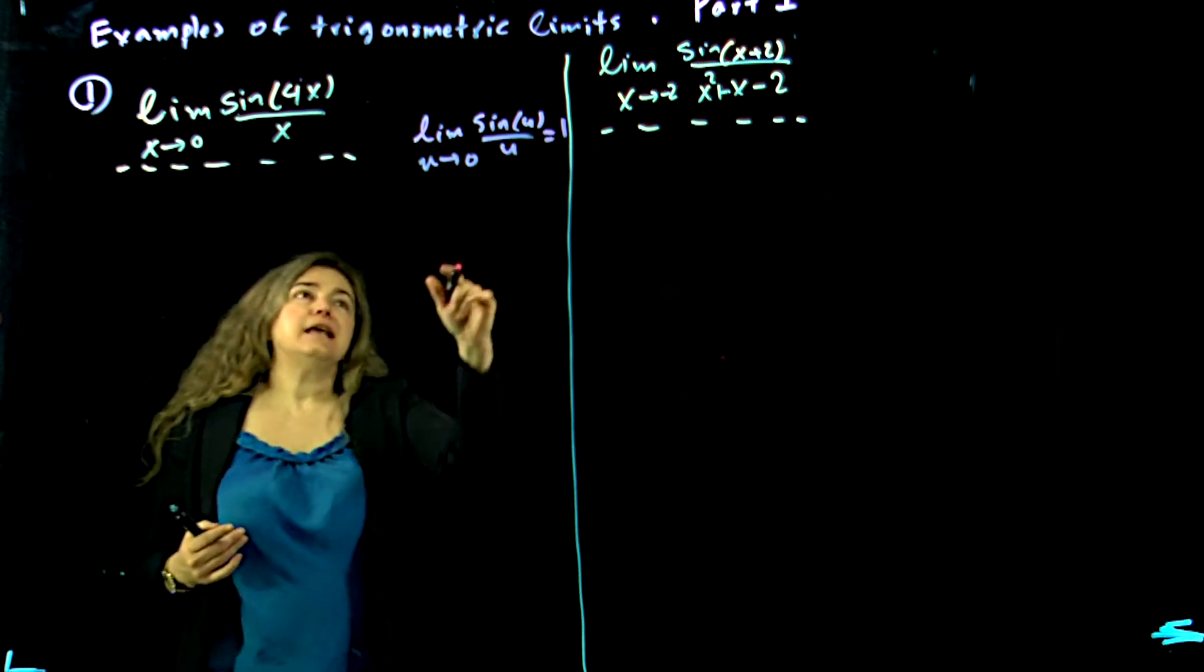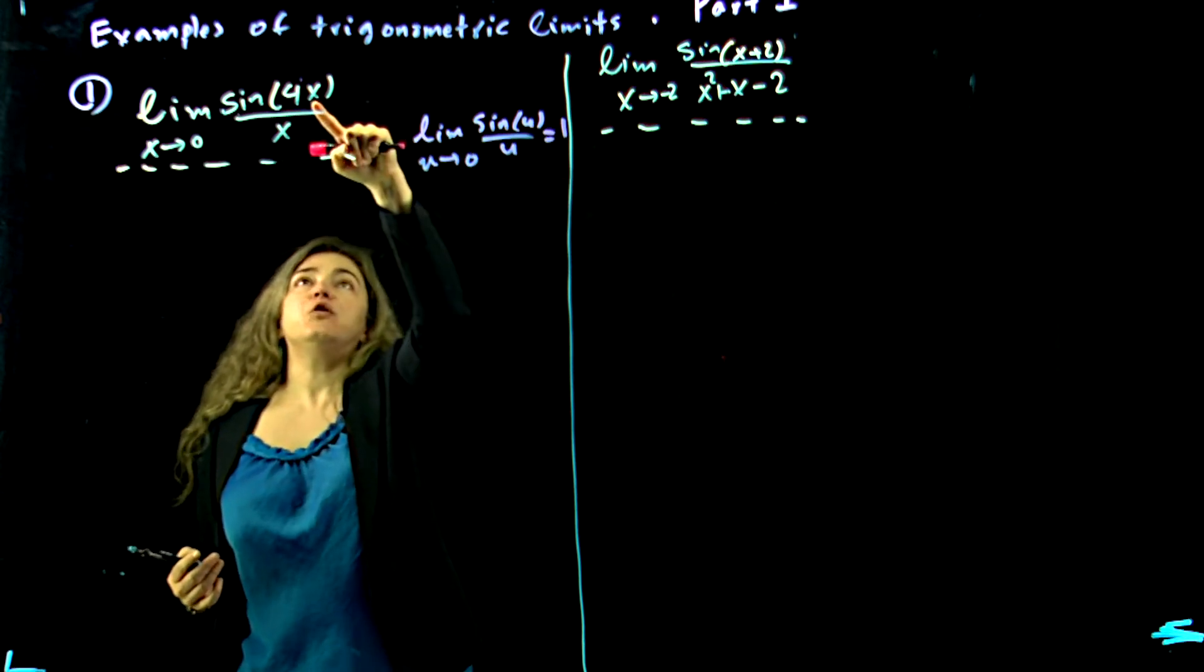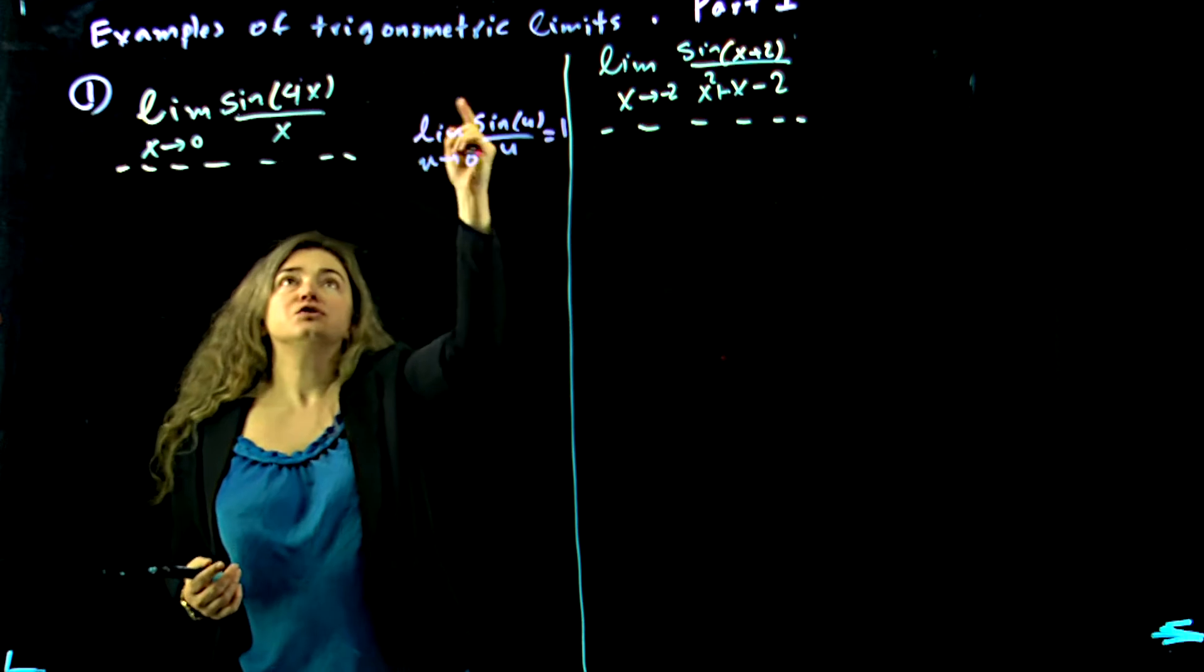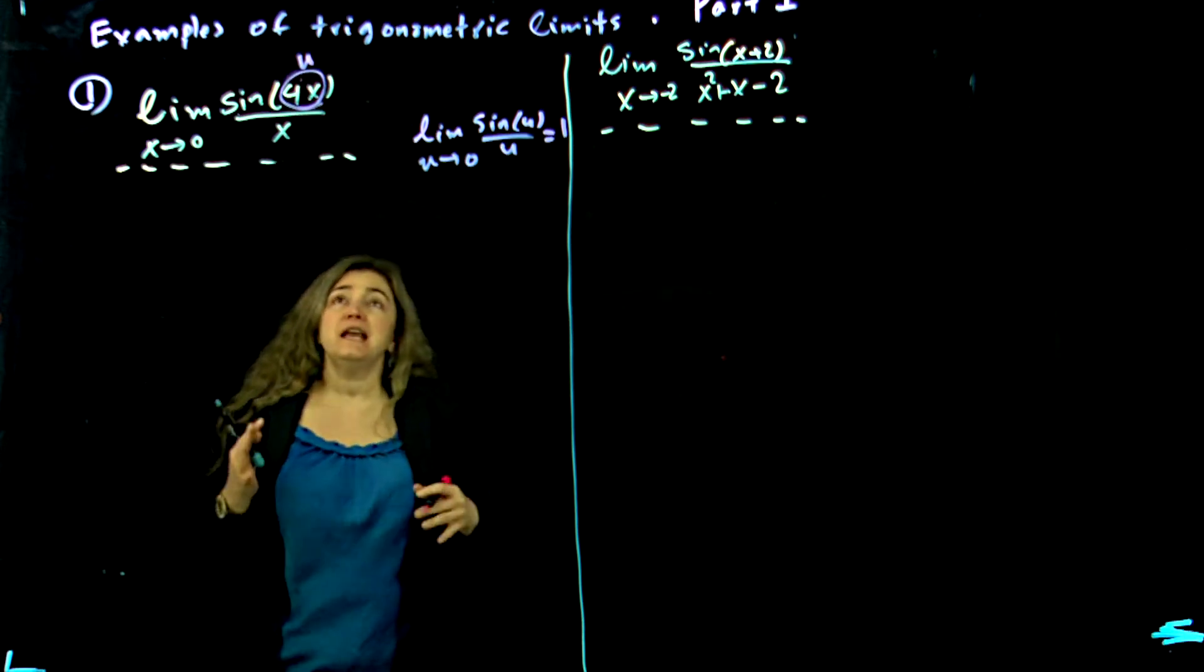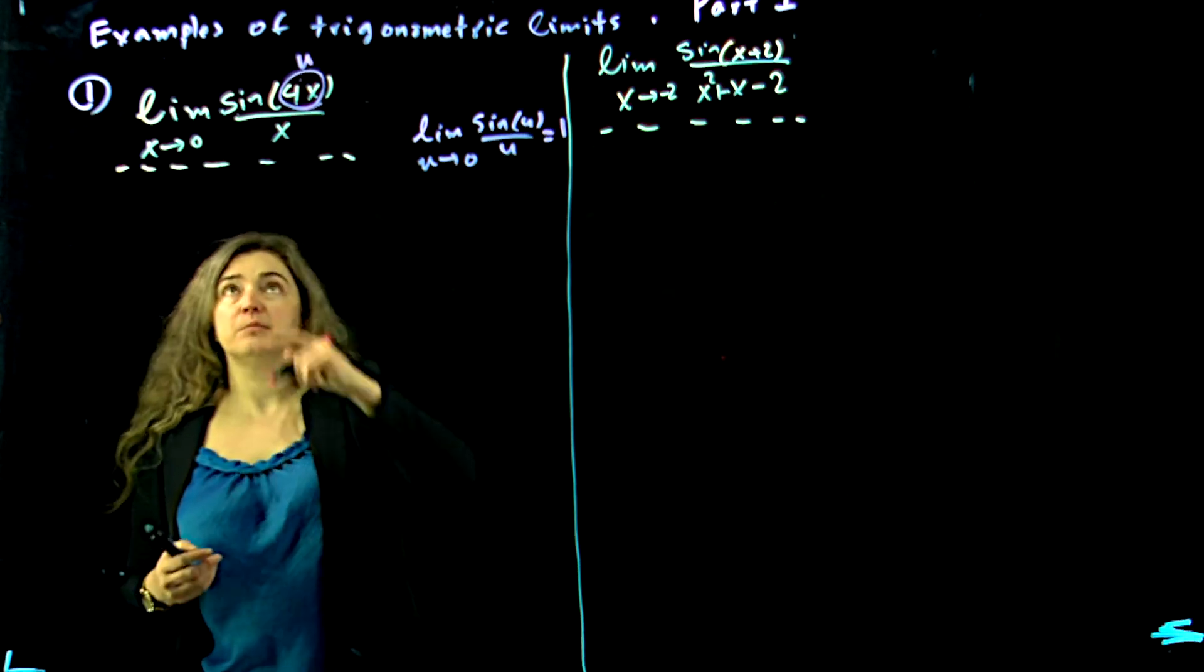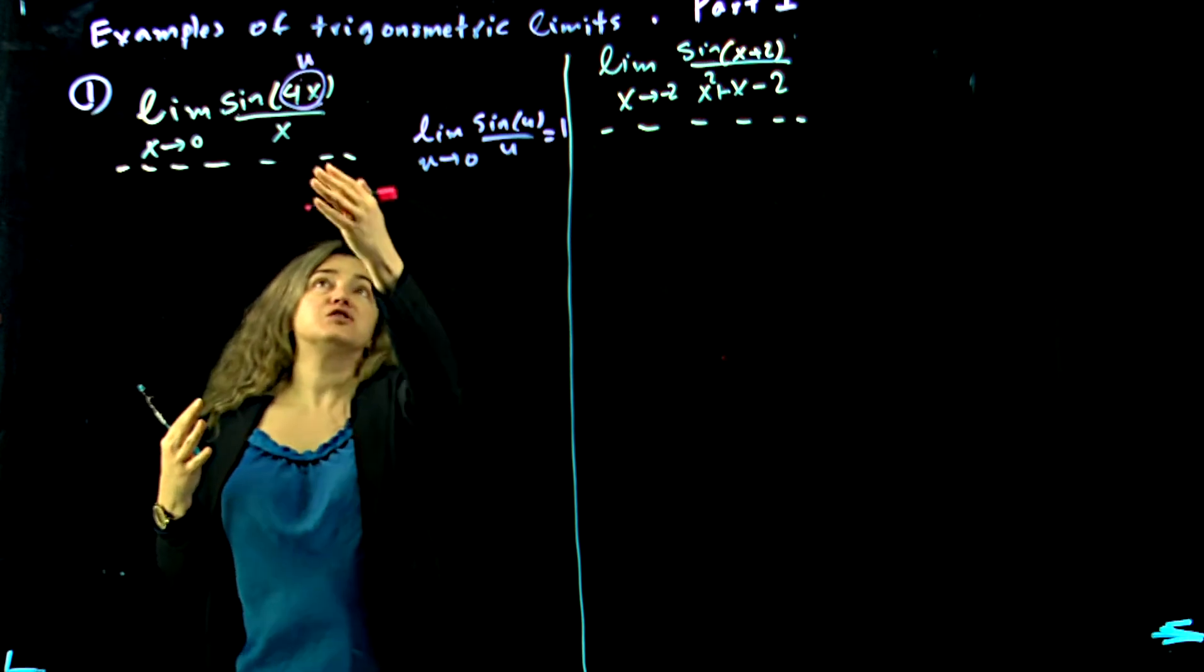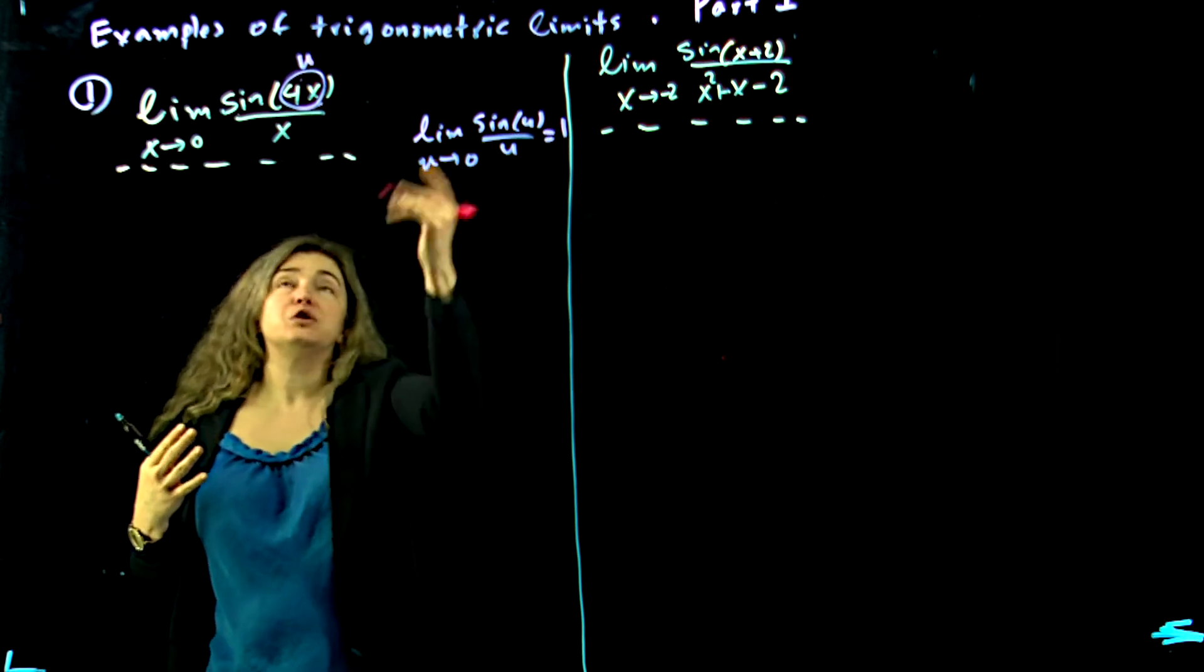Well I see that inside it has to be u, and over here I have 4x, so I'm gonna assume this is u. But then it doesn't match up because then I will not have u in the bottom. So how do I manage to have sine of u over u and then make it similar to that?